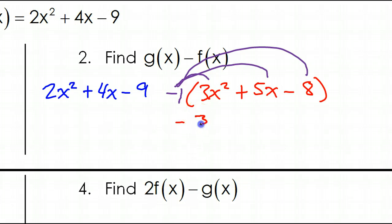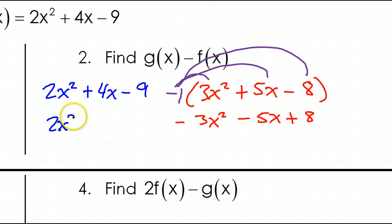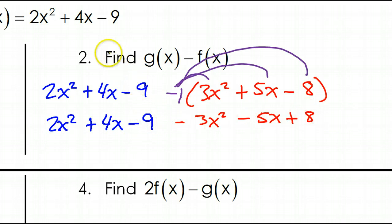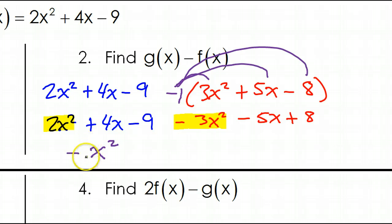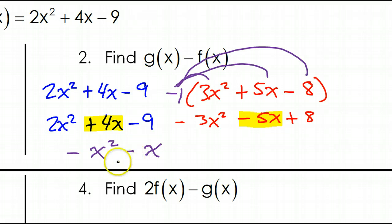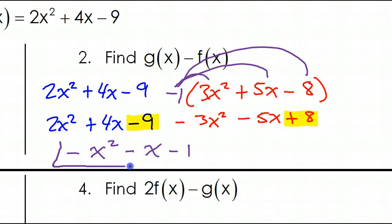Distributing the negative 1 gives you negative 3x squared minus 5x plus 8. Bringing down the other terms: 2x squared plus 4x minus 9. Now combine like terms. The 2x squared and negative 3x squared make negative x squared — that's like negative 1 but we don't write the 1. Positive 4x and negative 5x make negative x. Finally, negative 9 and positive 8 make negative 1. So this should be the final answer for number 2.